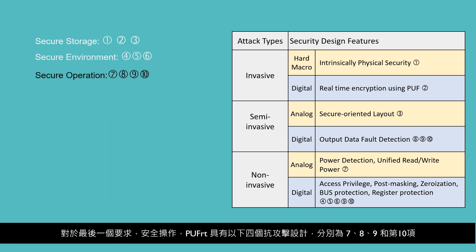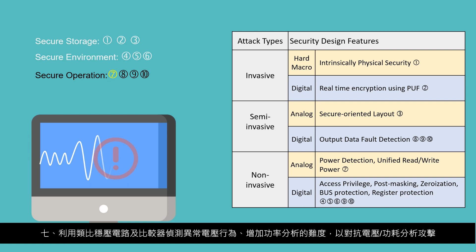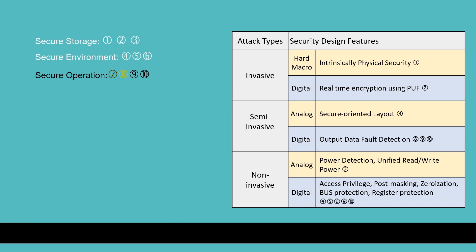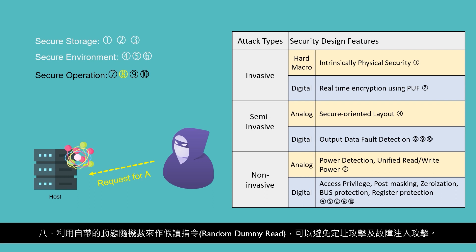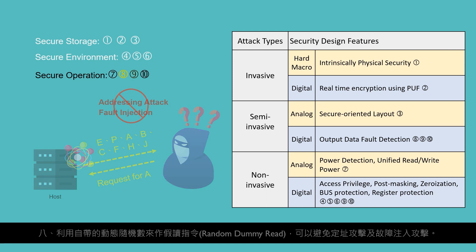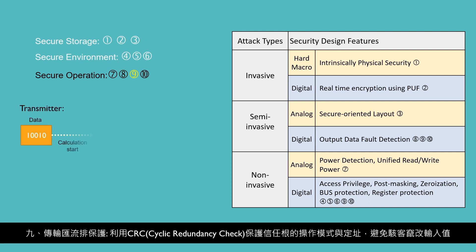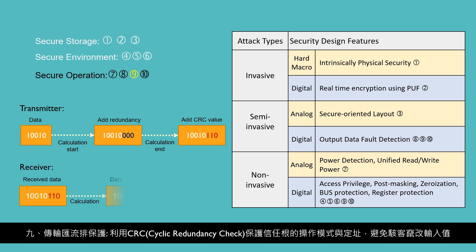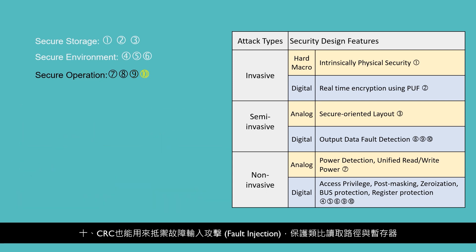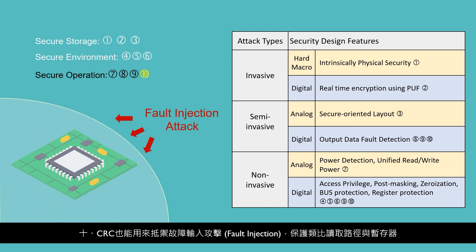For secure operation, PuffRT has the following four functions. Seventh, PuffRT can implement dummy readings, voltage regulator circuits, and level comparators to detect abnormal voltage behavior and increase the difficulty of correlation or differential power analysis. Eighth, randomize the read operation by building in a dynamic random number to prevent against addressing attacks and fault injection attacks. Ninth, using cyclic redundancy check (CRC) to protect the design from hackers arbitrarily changing input values regardless of security modes, function modes, and key addresses. Tenth, CRC is also used to protect the analog read path and registers against malicious attacks and inputting faulty values so the design will output legitimate information.